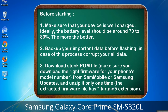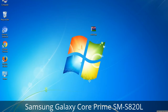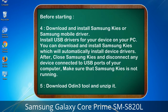Download from Sammobile or Samsung Updates, and unzip it only one time. The extracted firmware file has a *.tar.md5 extension. 4. Download and install Samsung KIS or Samsung mobile driver. Install USB drivers for your device on your PC. You can download Samsung KIS which will automatically install device drivers. After, close Samsung KIS and disconnect any device connected to USB ports. Make sure Samsung KIS is not running. 5. Download Odin 3 tool and unzip it.